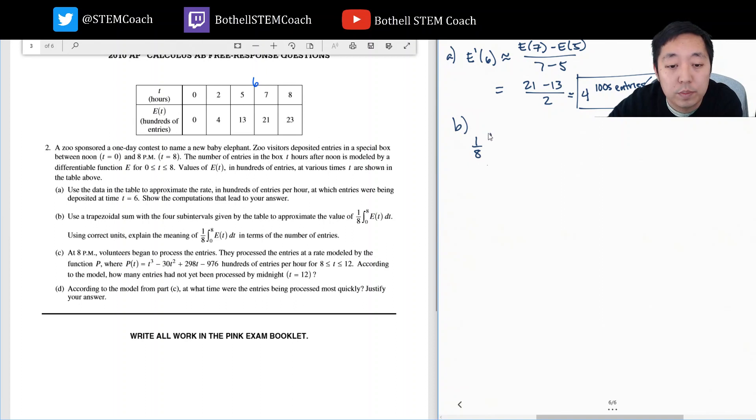So trapezoid sum, not infinity, eight, e of t dt. I'm gonna do approximately equal to one eighth. And with trapezoid sum, what I'm doing is I am doing the width of each interval and I'm averaging the two values here. So this is two times one half times four plus zero plus two times... Oh no, this is not two. This one is three, five minus two. Three times one half times thirteen plus four plus two times one half times twenty-one plus thirteen. Plus eight minus seven is one times one half, twenty-one plus twenty-three.